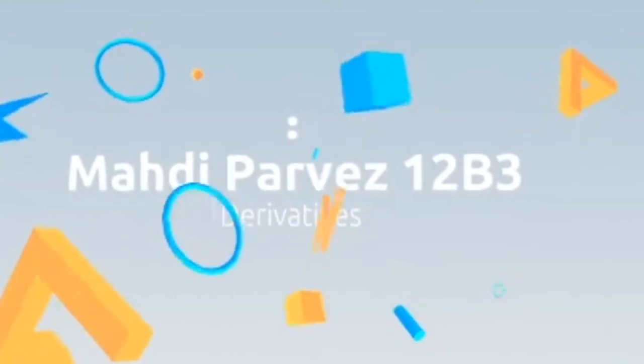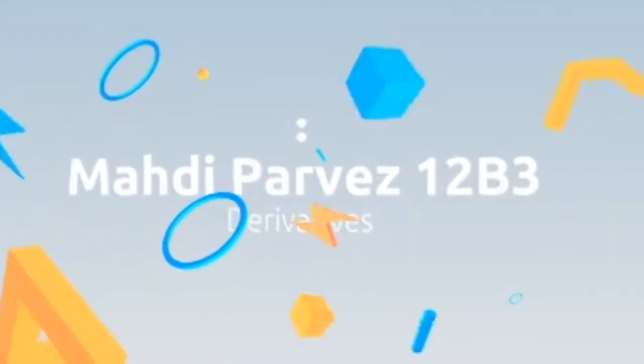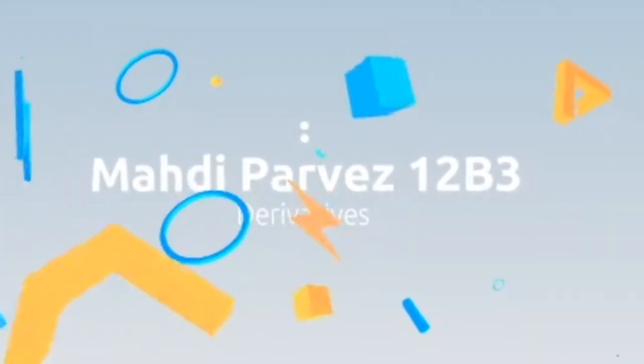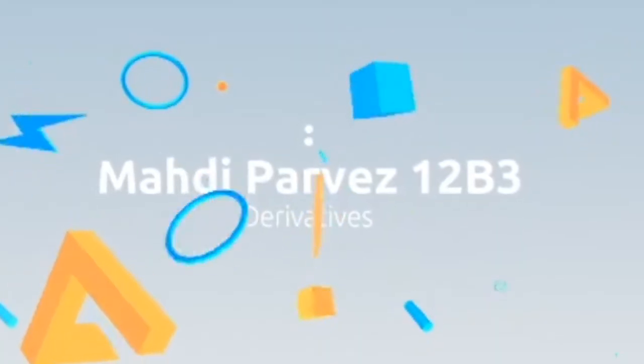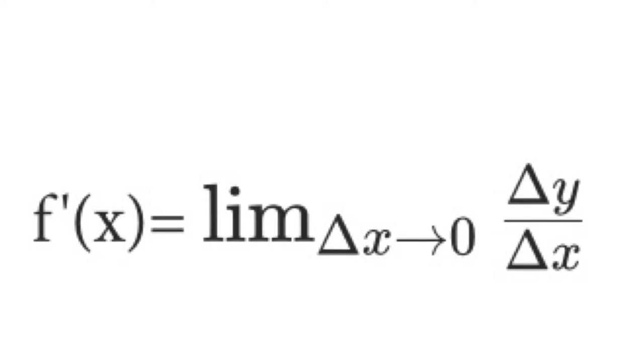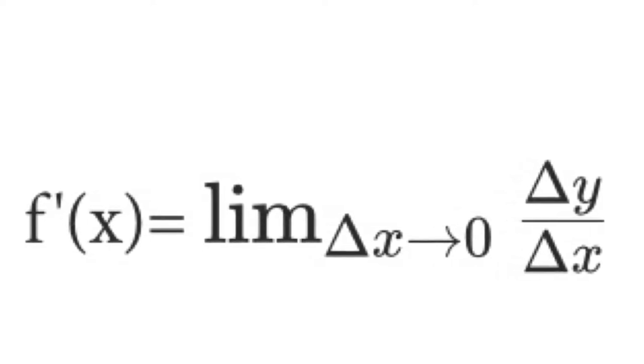The derivative of a function at a given point characterizes the rate of change of the function at that point. So we can estimate the rate of change by calculating the ratio of change of the function delta y with respect to the change of the independent variable delta x. So in the definition of the derivative, the limit value of this ratio is considered as delta x approaches zero.